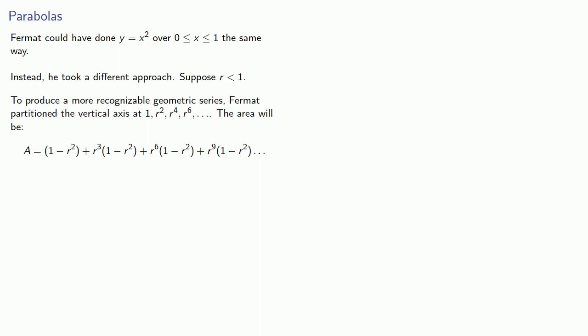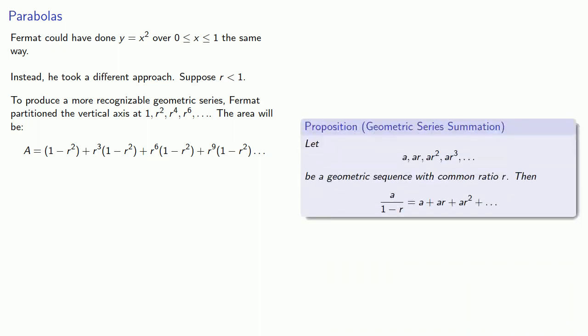And so once again, our areas form a geometric sequence, and the total area is a geometric series. So we have the first term of the series, 1 minus r squared, and the common ratio is r cubed. And so the sum of the series, 1 minus r squared over 1 minus r cubed, which simplifies to...